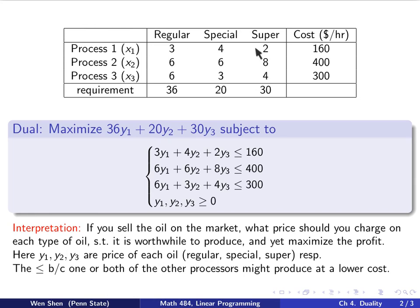The constraint now goes horizontally. If y1 is price, regular is price y1, and this is y2, this is y3, and then you add them all up, and that should be less than the cost of using the machine. This less than equal sign here for this constraint is because one or both of the other processors might produce at a lower price. So you cannot have it bigger than that number. This is one way of viewing the dual problem from the opposite side of the problem.